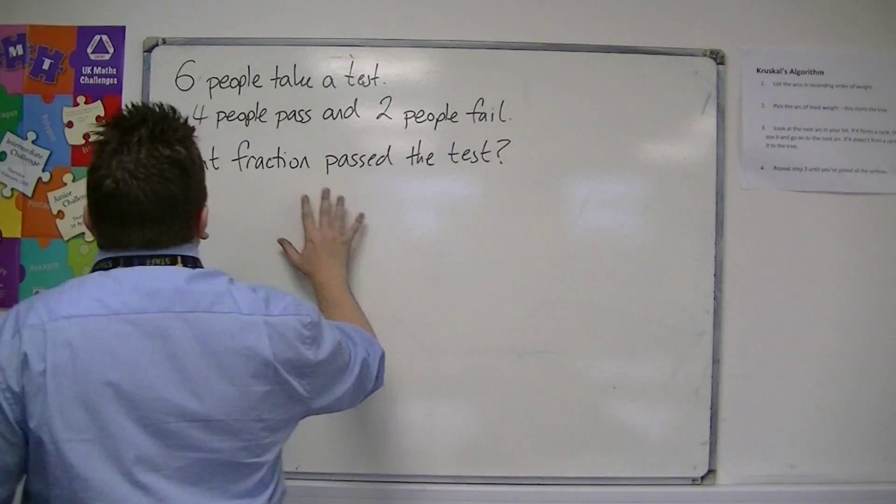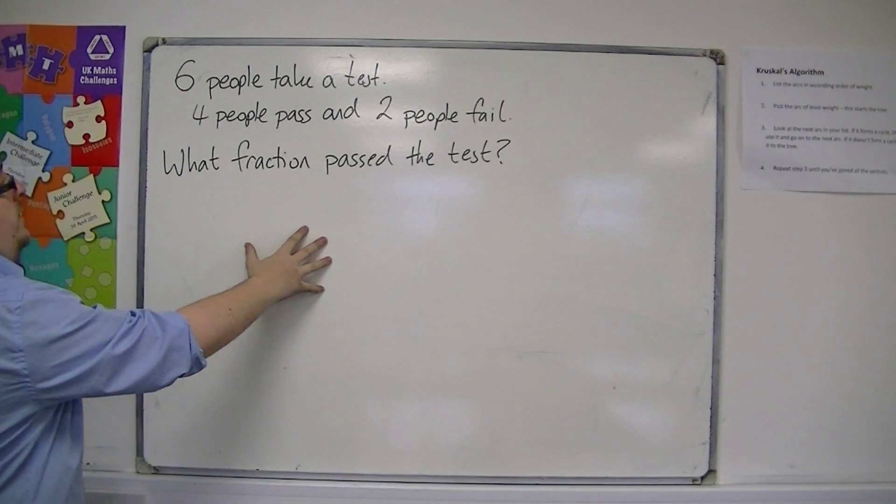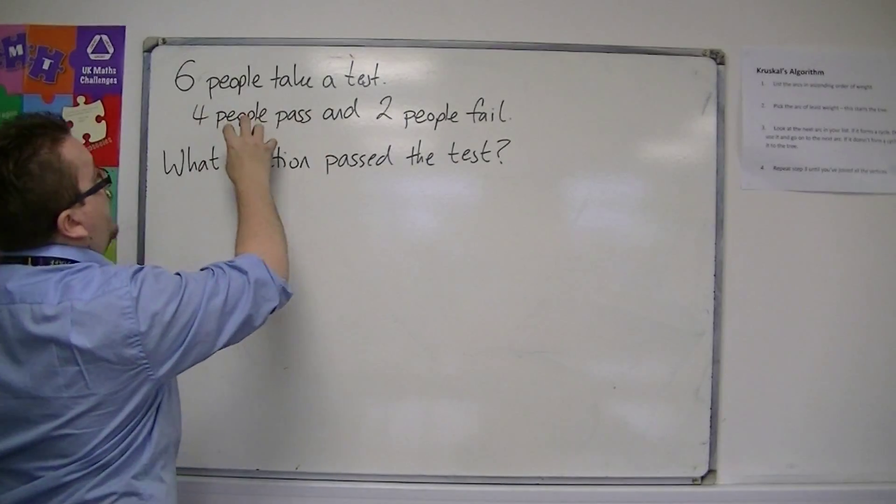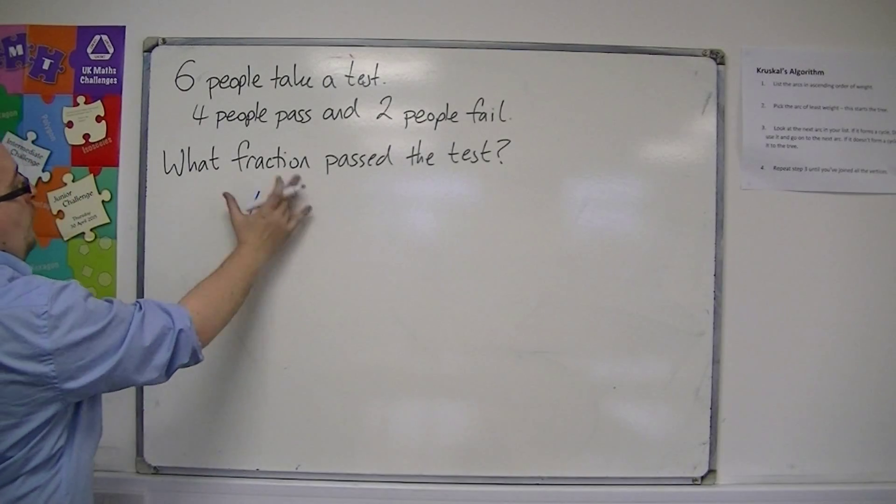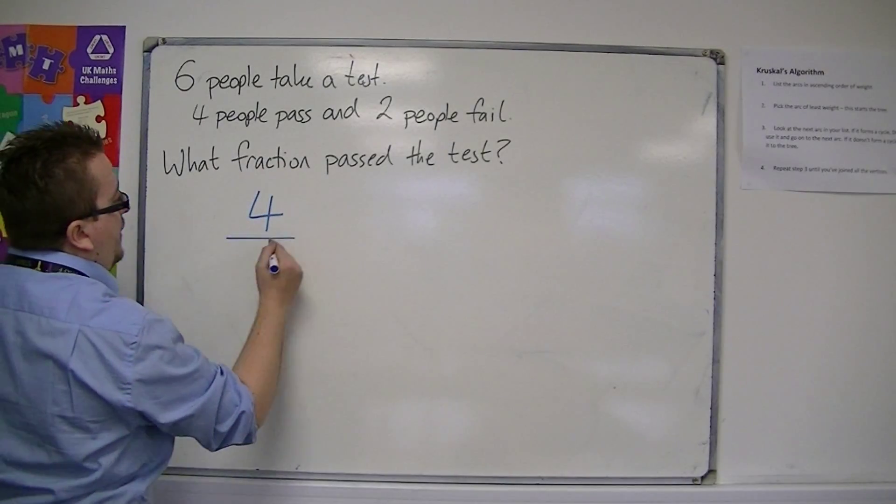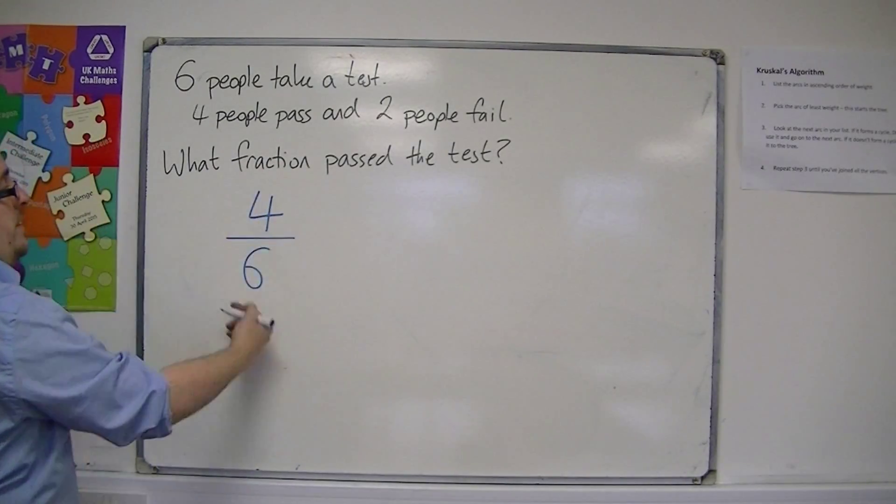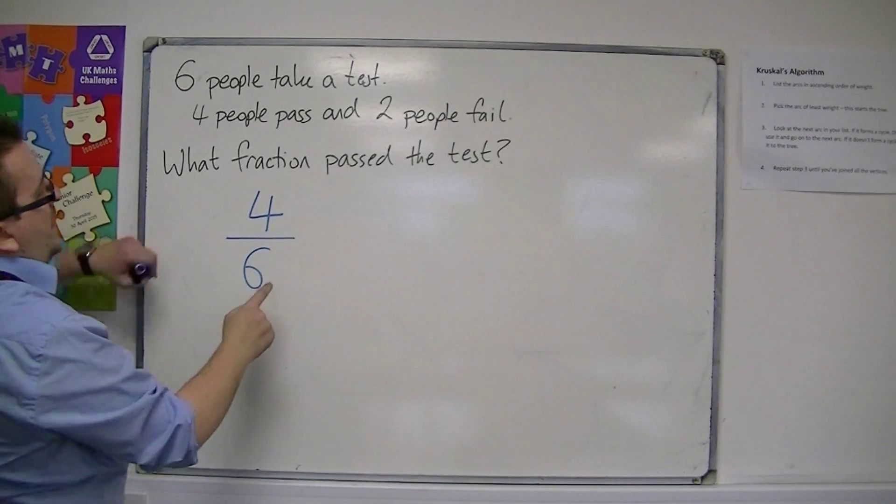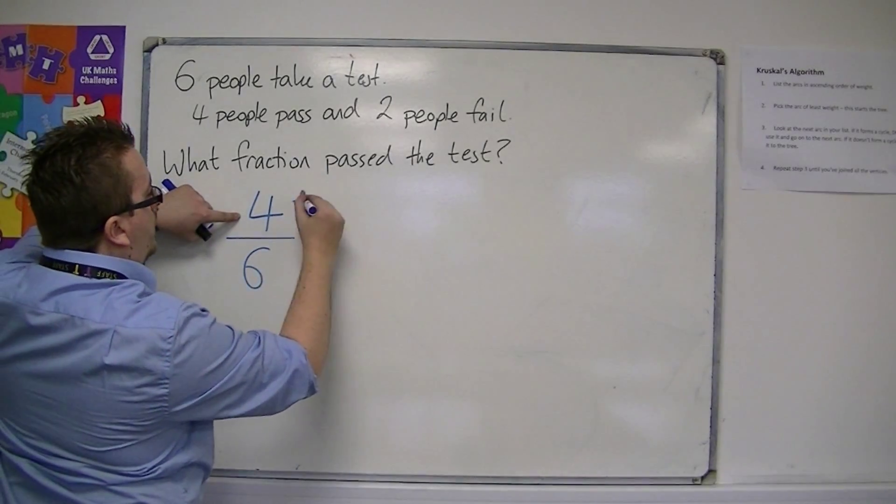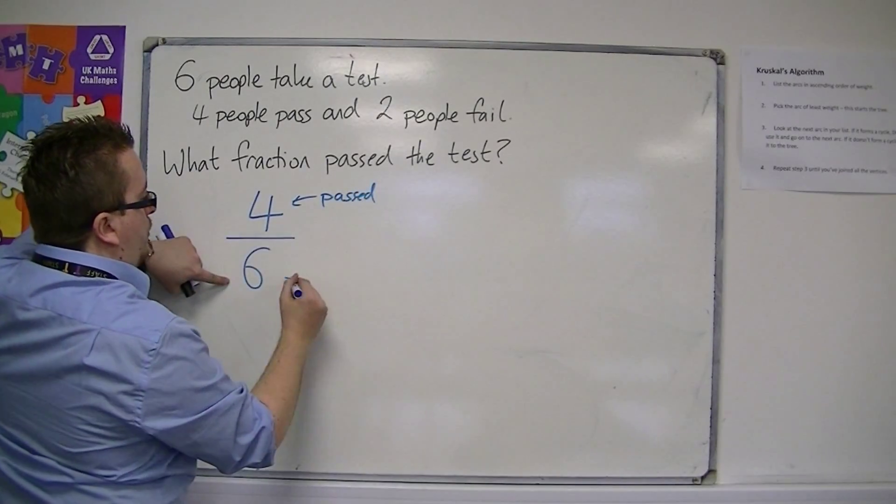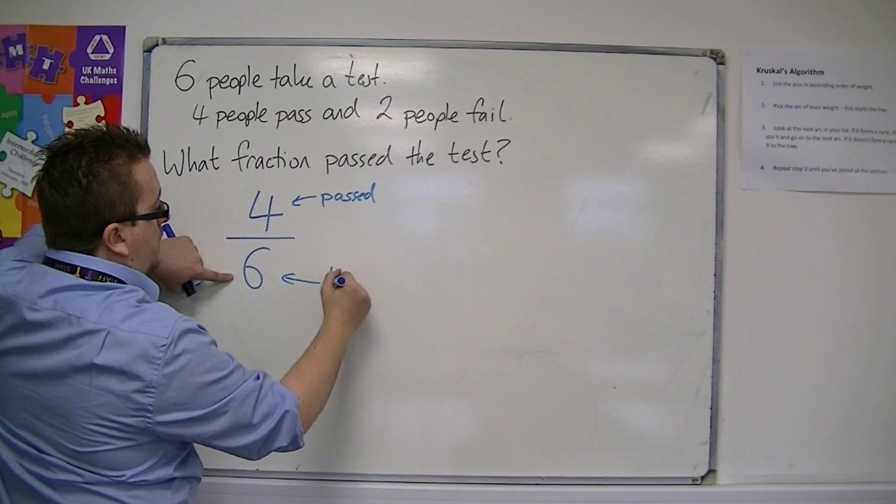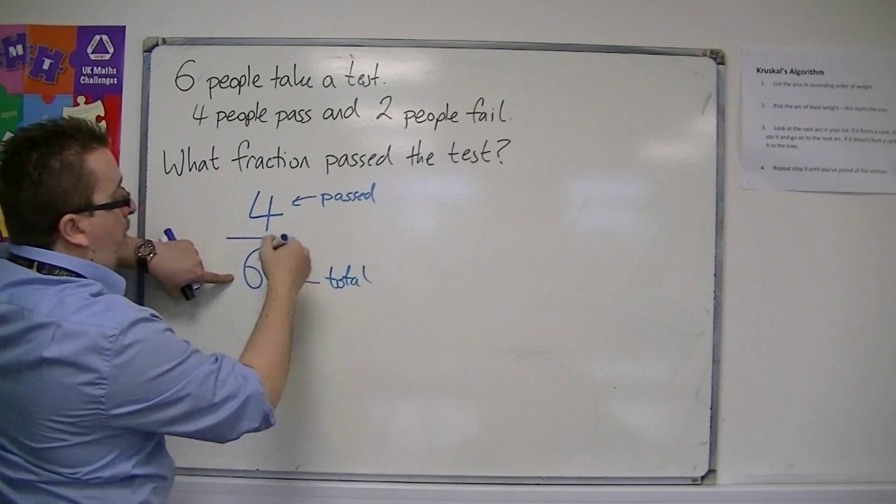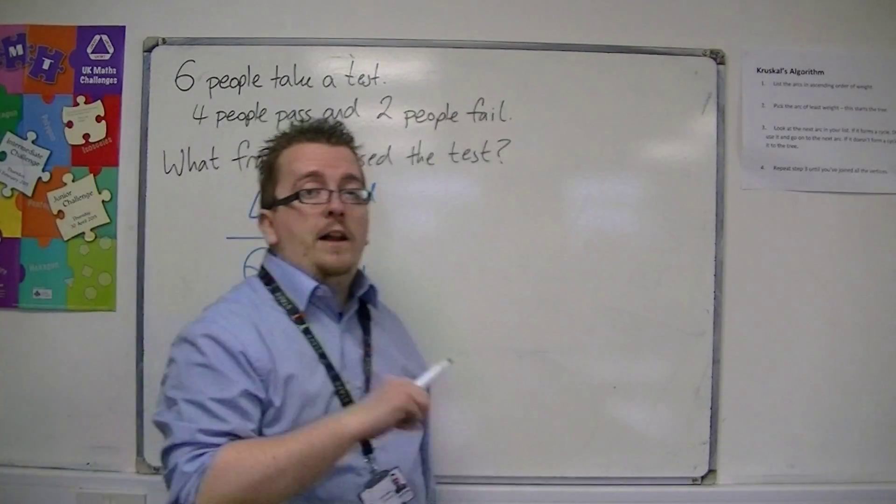So the idea is that if we're looking at how many passed the test, four of them passed out of a possible six. So what you want is the four people out of the six to be written as a fraction this way. So the actual people who passed on the top and those, well how many actually took the test, so the total on the bottom. So four out of the six.